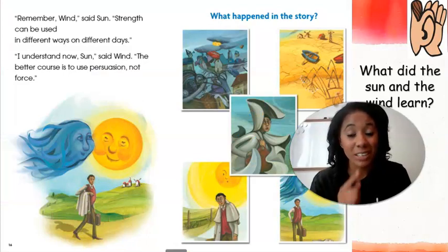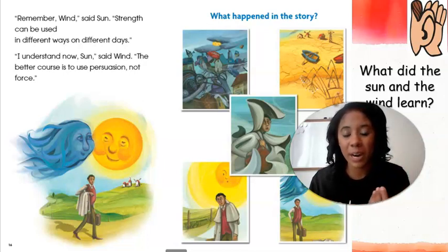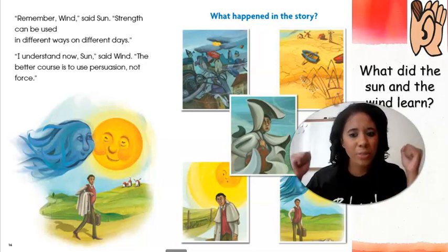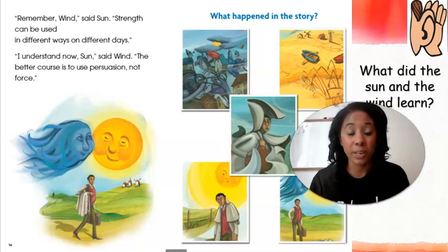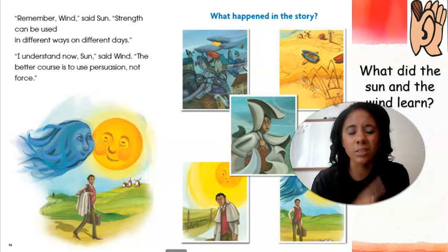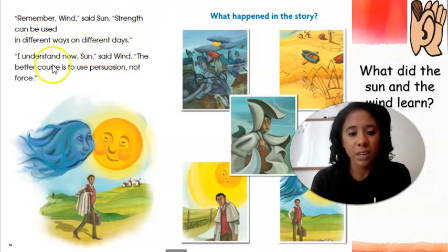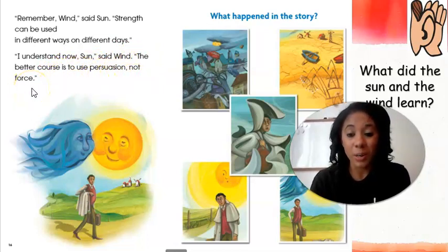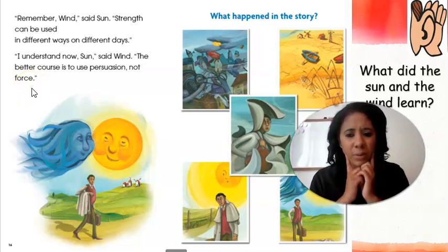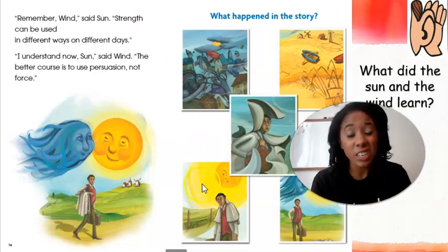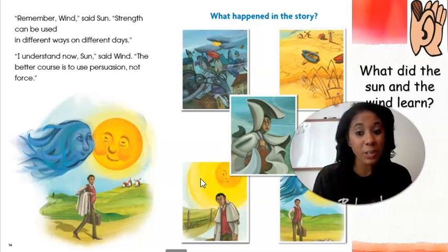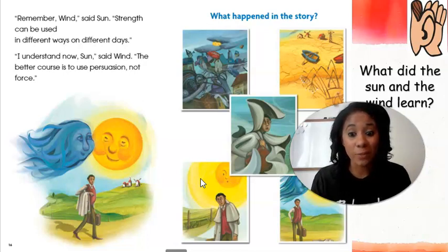We're at that last page. Listen closely to see if you can figure out what the sun and the wind learned throughout the whole story. 'Remember, wind,' said sun, 'strength can be used in different ways on different days.' 'I understand now,' sun said. 'Wind, the better course is to use persuasion, not force.' This page gives you amazing text evidence to figure out what the sun and the wind learned. You might have to rewind and go back to this screen when you're writing.